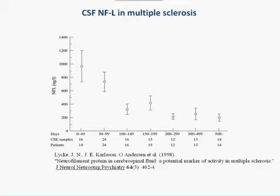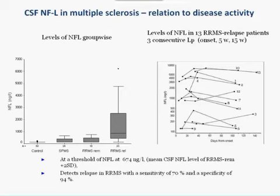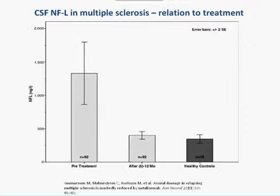Here are some data on multiple sclerosis, a typical white matter disease of the brain, where CSF neurofilament light concentrations are highest in the active phase of multiple sclerosis. If you are far from a relapse, the neurofilament light concentrations in cerebrospinal fluid go down. This slide shows an association of CSF neurofilament light concentrations with relapse in multiple sclerosis, and if you treat patients with multiple sclerosis, CSF neurofilament light concentrations normalize.